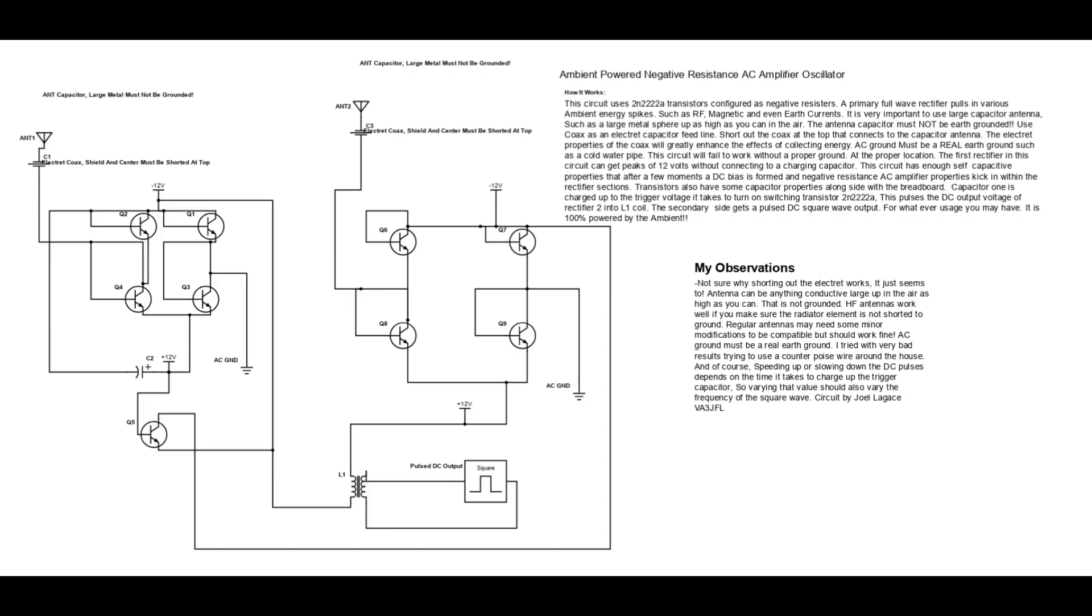The first rectifier in this circuit can get peaks of 12 volts DC without connecting to a charging capacitor. This circuit has enough self-capacitive properties that after a few moments, a DC bias is formed, and negative resistance AC amplifier properties kick in within the rectifier sections of this circuit.